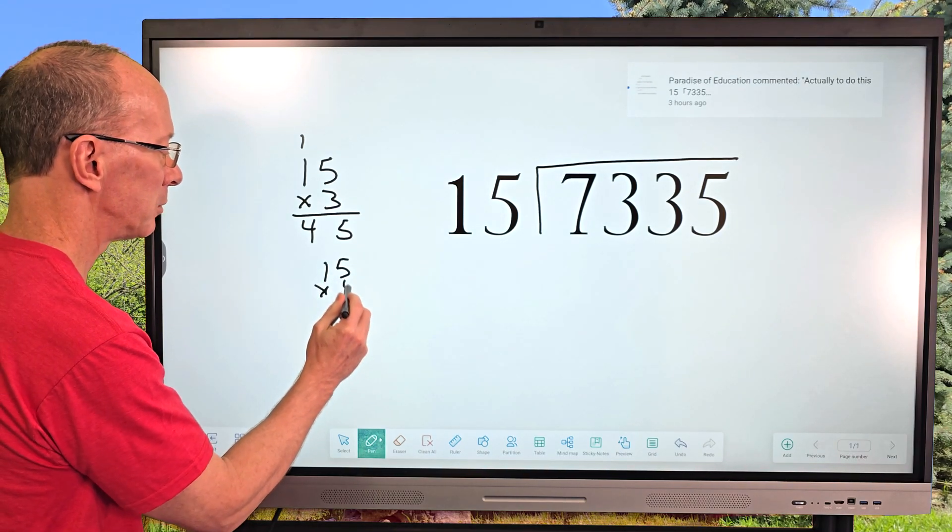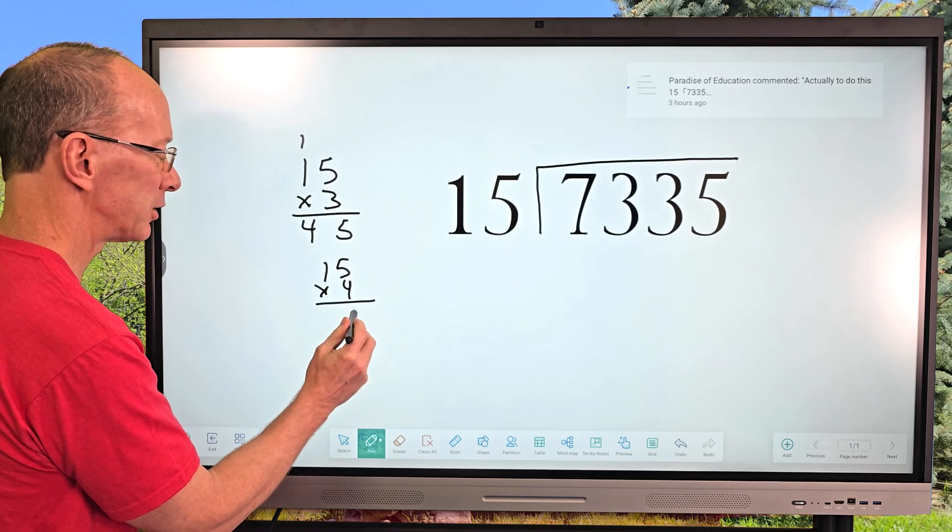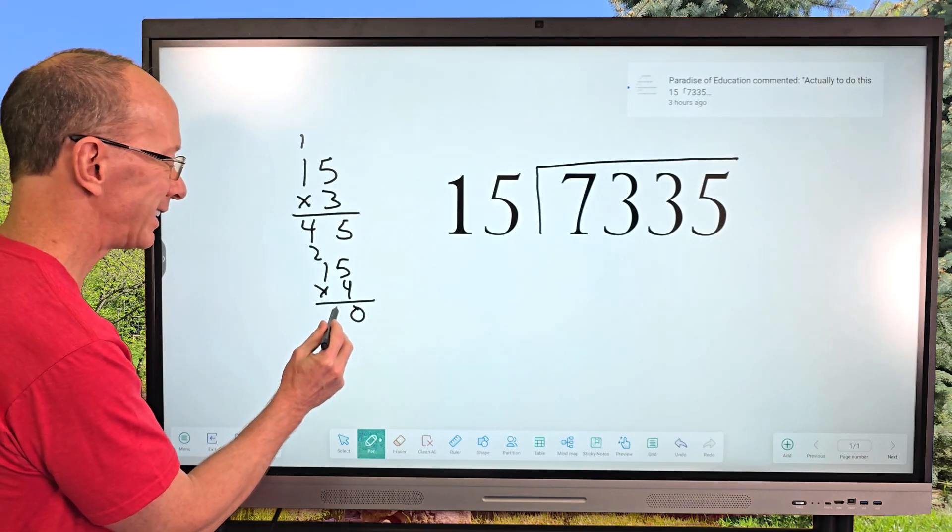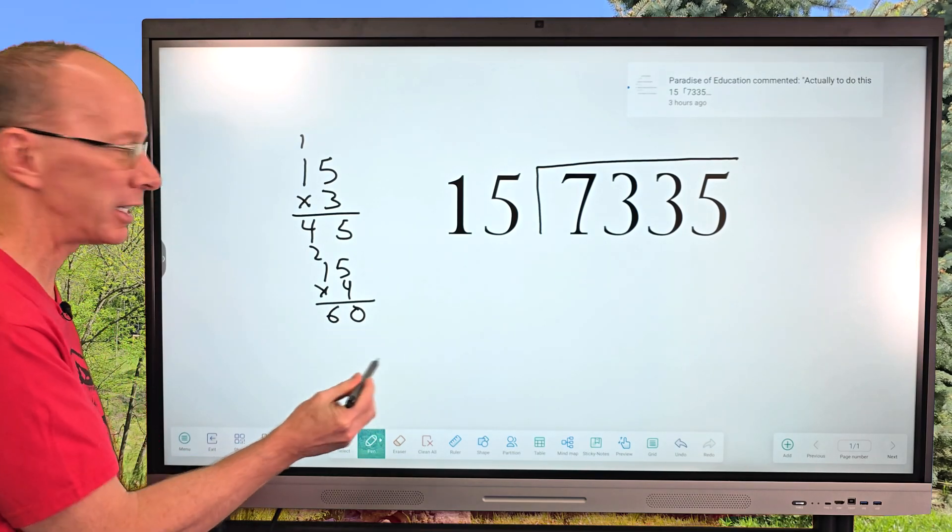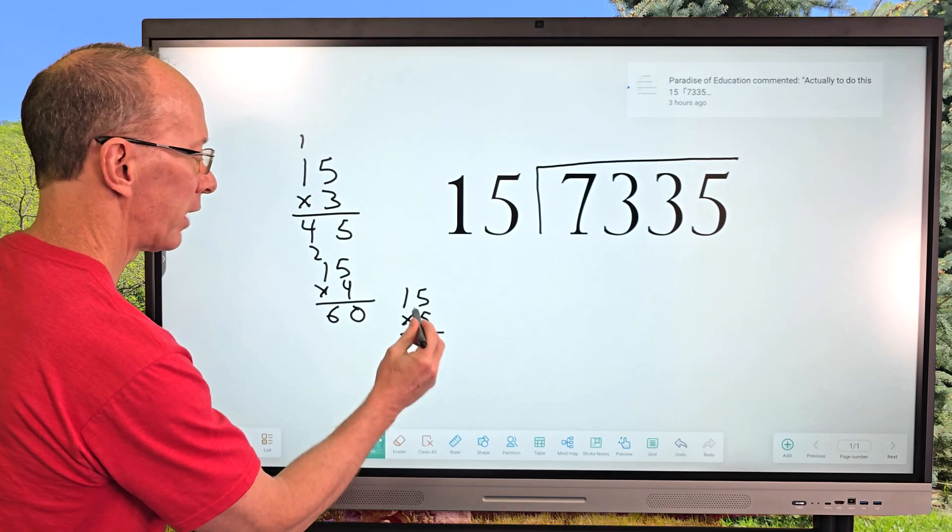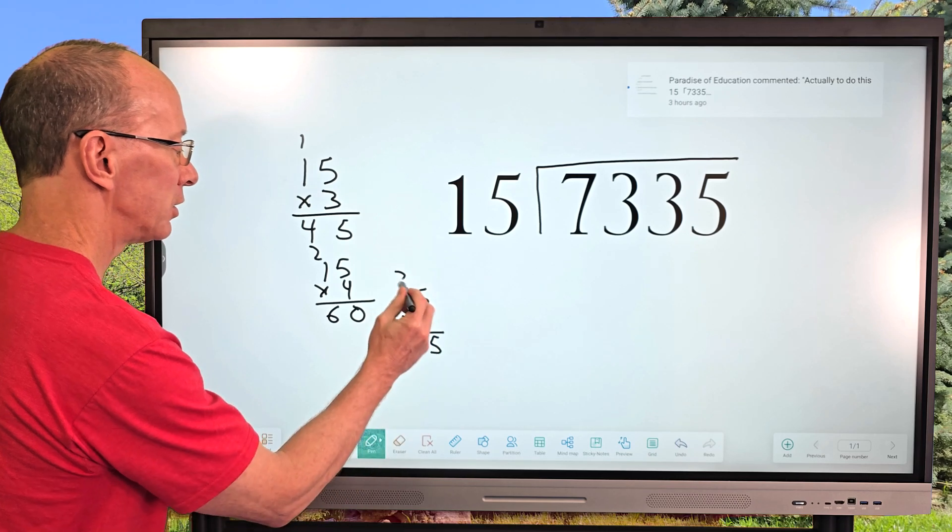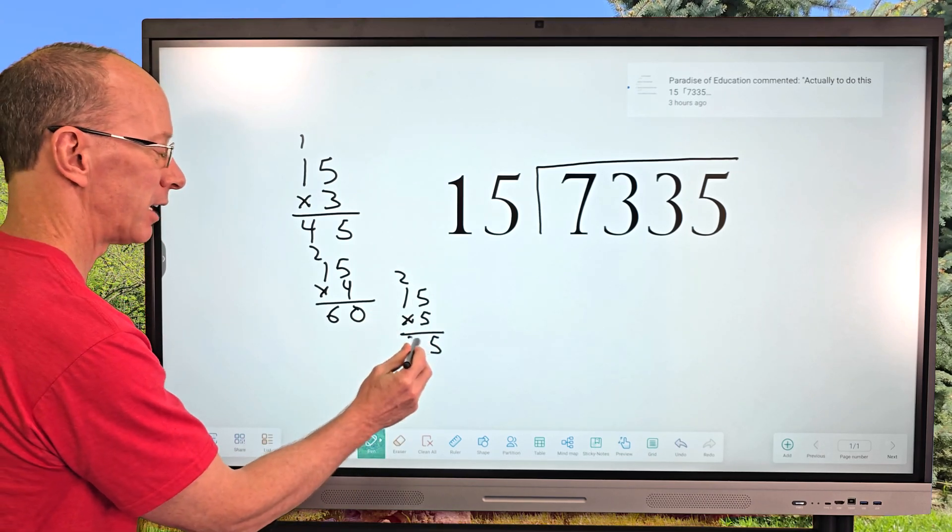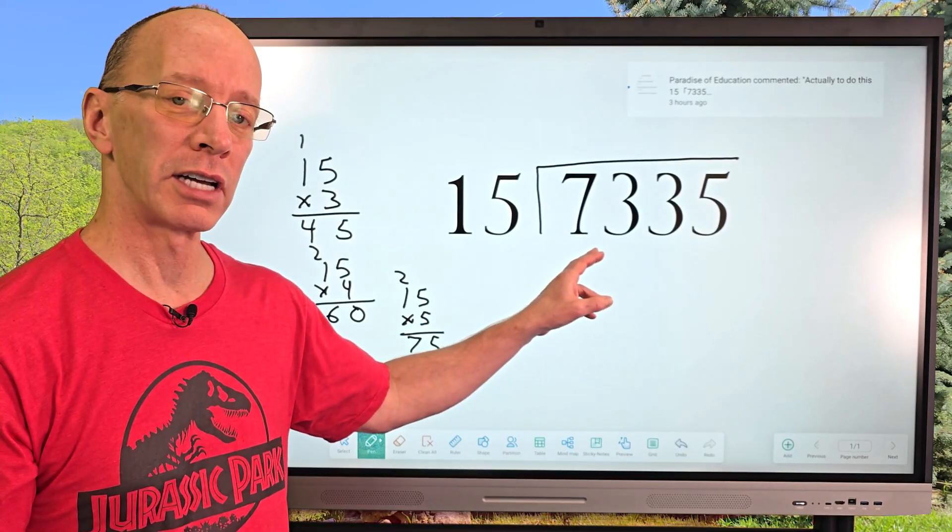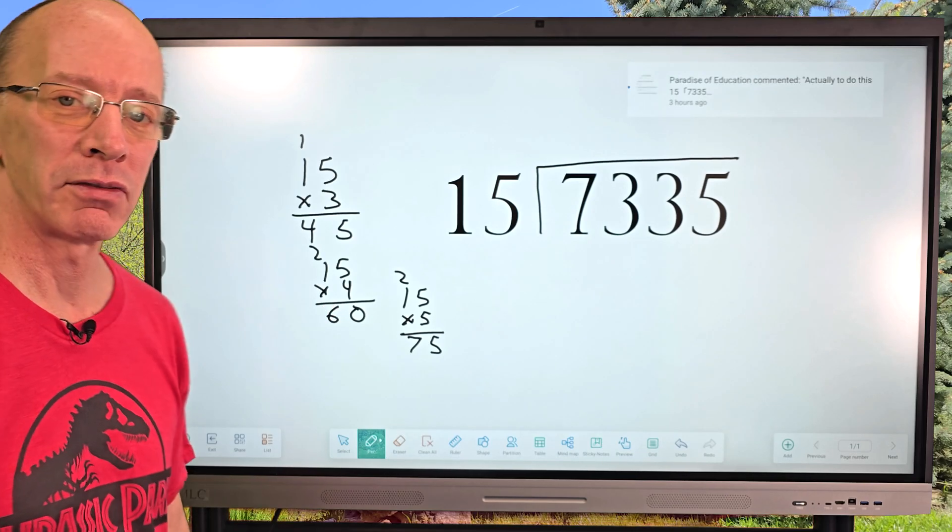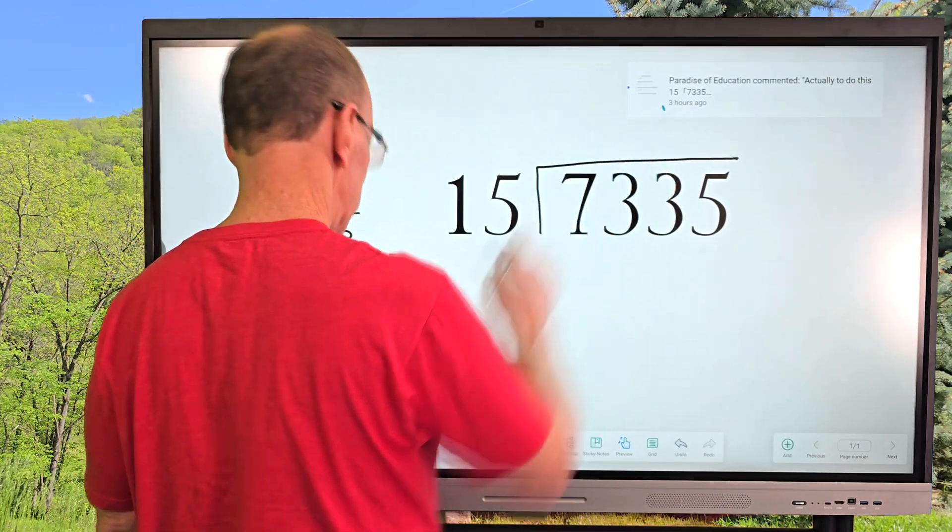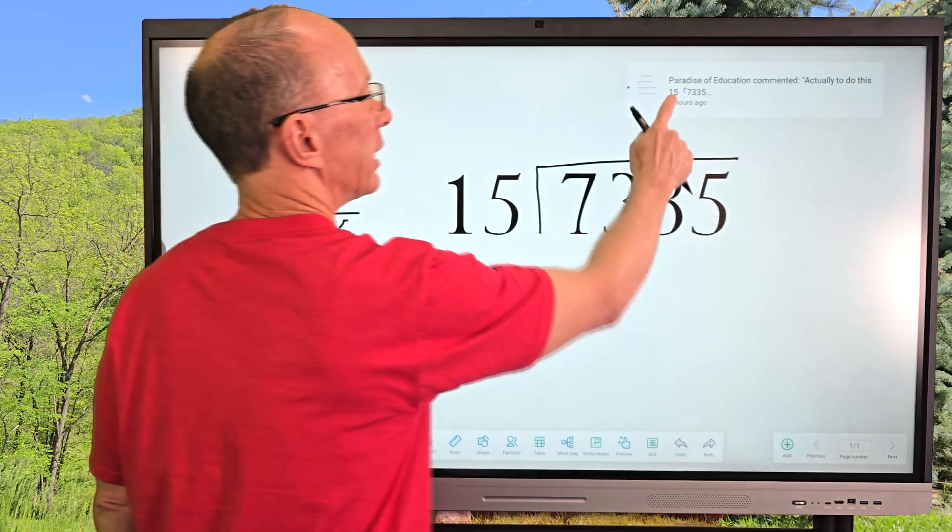15 times 4. So 5 times 4 is 20. Carry the 2 and then 4 times 1 is 4 plus the 2, which would be 60. And let's do one more. 15 times 5. So 5 times 5 is 25. Carry the 2 and then 5, 6, 7. So we have 75. As you can see, 75 is too big, goes over 73. So we're going to use 15 times 4. So I'm going to go ahead and put the 4 right here. Let me move this to the side here once.